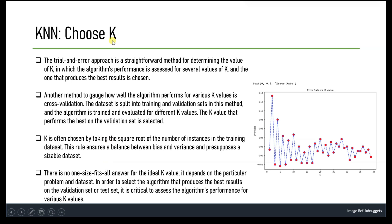Now let's understand how to choose the number K, that is the number of neighbors. The value of K in KNN is an important hyperparameter that determines the number of neighbors to consider when making predictions. The choice of K can have a significant impact on the performance of the algorithm. The optimal K value can significantly affect performance, so there are various techniques to determine it.